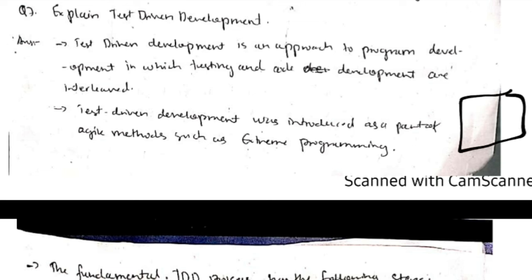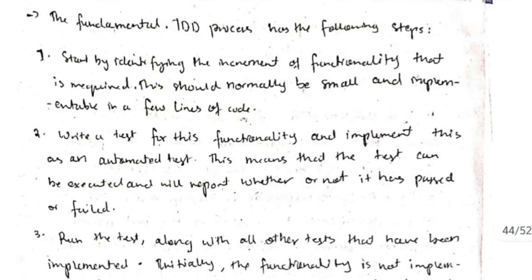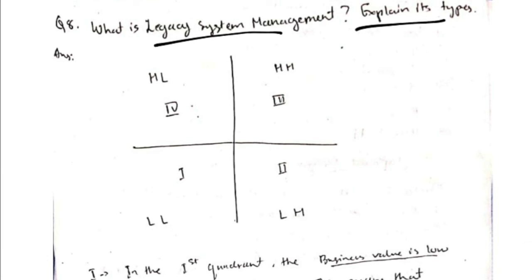Test-driven development: when a product is being developed and a new functionality is added, the test for that function is carried out immediately. Because each function is tested when added, a full re-test of the whole product is not necessary at the final stage. The process: write a part of the code and test it; if it works, move to the next step and add a second function; test both together. If an error occurs when testing both together but not individually, the error is mostly in the new part, making it much easier to identify and fix.